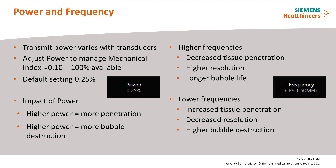Transmit power will vary with the selected transducer and is used to manage the mechanical index or MI level. Available settings are approximately 0.10 to 100%; the default setting is at 0.25%. Transmit power is kept very low in contrast imaging to help maintain bubble integrity, and it is important to remember the impact of power prior to any adjustments.